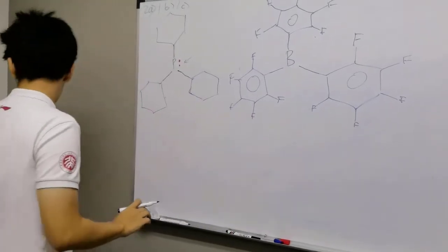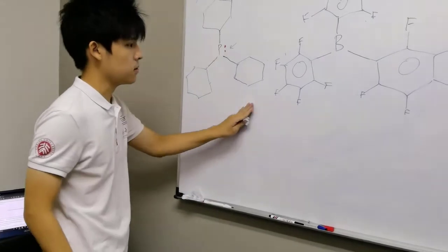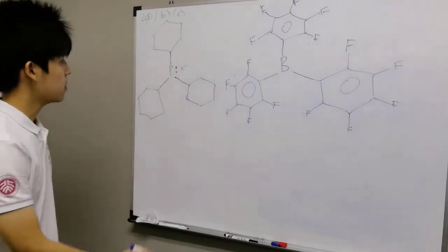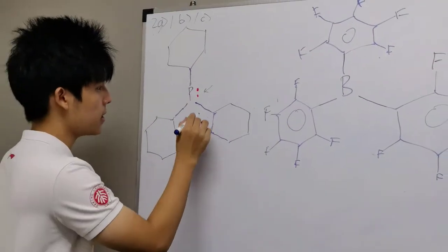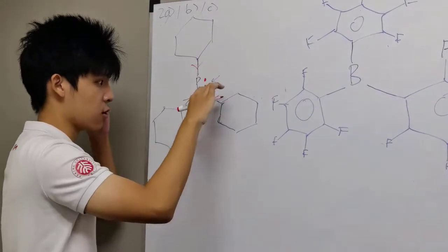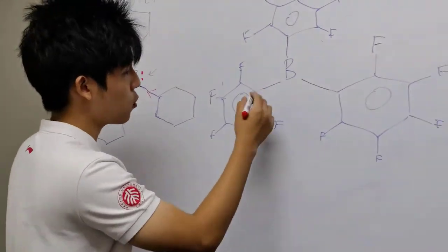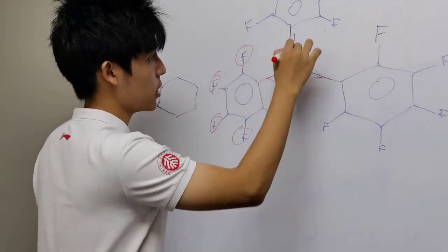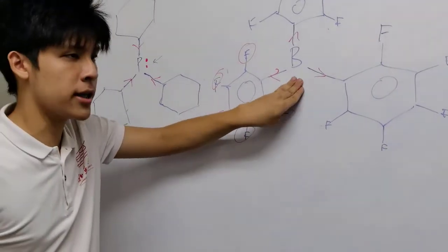Why is this a very good Lewis base, and why is this a very good Lewis acid? In the phosphine, there are 3 large alkyl groups that inductively donate electron density into the phosphorus, enhancing the electron density around the phosphorus and making it a better Lewis base. For borane, all the fluorine atoms inductively withdraw electron density from the boron, making it way more electron deficient and a way better Lewis acid.